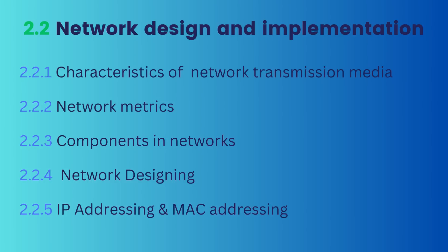Moving to the second subtopic, Network Design and Implementation, we have a lot of new things to study. First, we need to study different network transmission media: wireless media such as microwave, radio waves, light, and satellite; and wired media such as copper twisted pair cable, fiber, and power lines. Under 2.2.2, we need to understand a variety of network metrics such as network speed, bandwidth, throughput, and scalability. You will learn the definitions, meanings, and examples of each in coming videos.